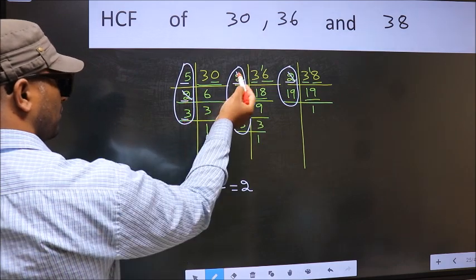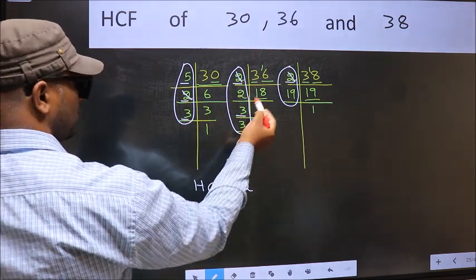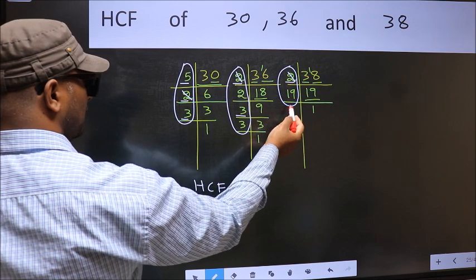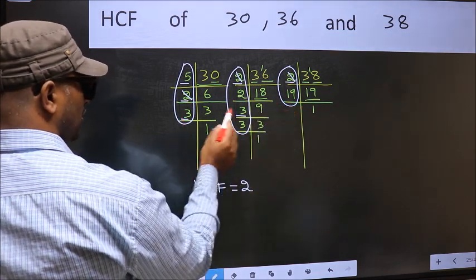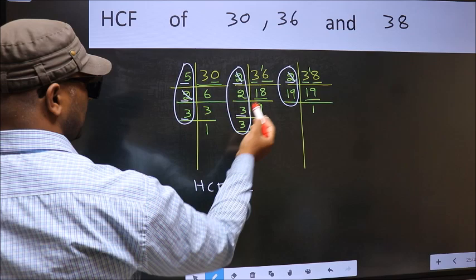Next number 3. Do we have 3 here? Yes. Go to the next place. Do we have 3 here? No. 3 is not present in all the 3 places.